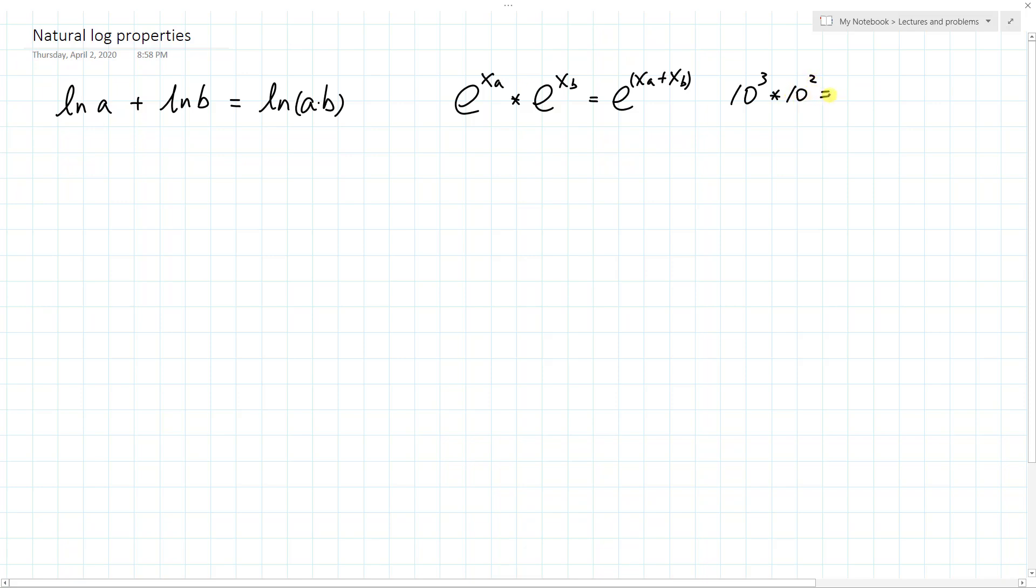So you know, this is 100,000. So this is 100,000, which is 10 to the 3 plus 2 power. So you can imagine this as, well, if you have the same exact base, the powers will add when the two numbers are multiplied together.